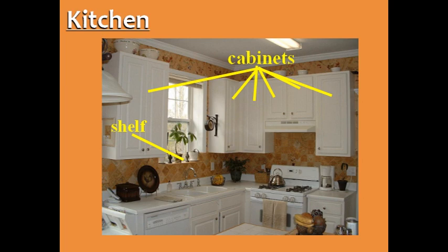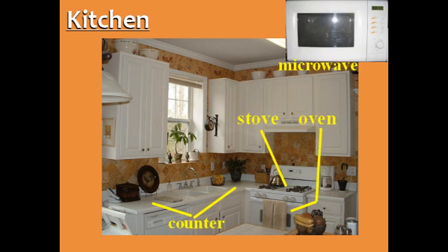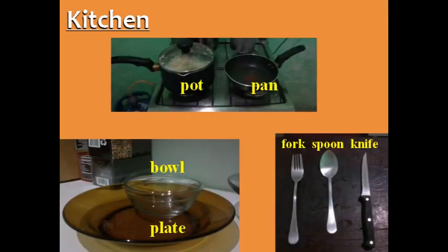The plural of shelf is shelves. You can prepare food on the counter, cook food on the stove or in the oven, and heat it up in the microwave. There are many objects in the kitchen, but the most common are pots, pans, bowls, plates, forks, spoons, and knives.